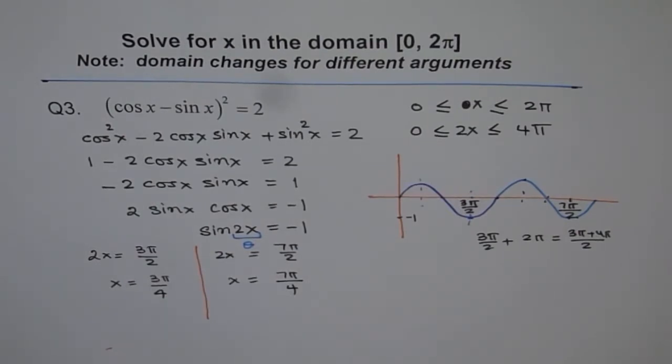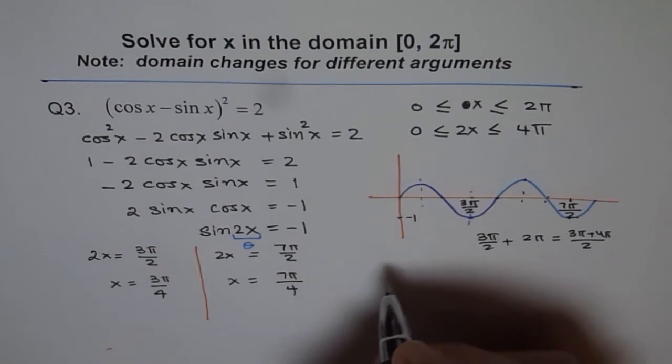The other check is, you should see, now x value is between 0 to 2π. So 3π/4 is well within 2π, and 7π/4 is also within 2π. So these are the two answers we are looking for. That is how we will do this question.